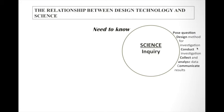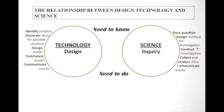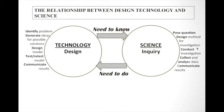One of the ways to understand the relationship between technology and science, particularly in terms of processes, is to relate enquiry to science as the need to know and to relate design to technology as the need to do. And the information obtained as a result of the science investigations will then inform the design and the construction of the product that the students are intended to make.